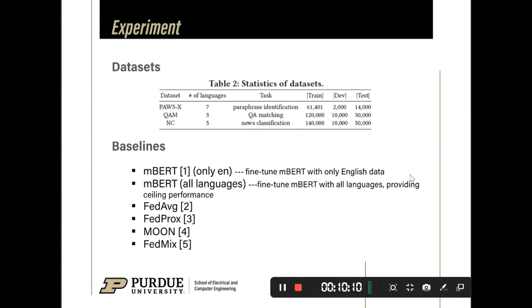For the mBERT-only-English, that means we fine-tune mBERT with only English data. And the baseline mBERT-all-languages means that we fine-tune mBERT with all languages. It provides the ceiling performance.